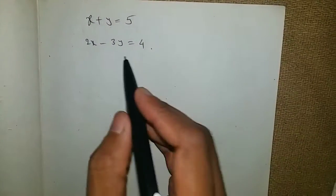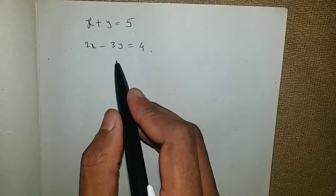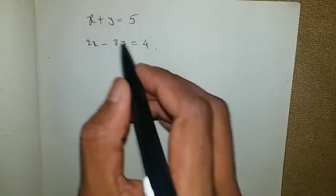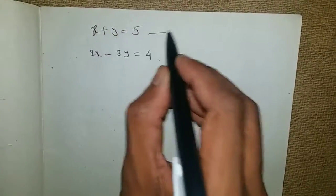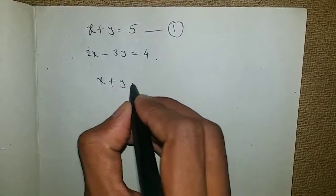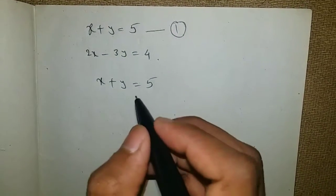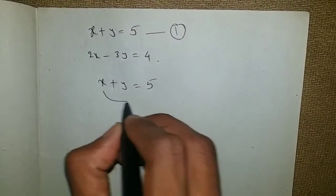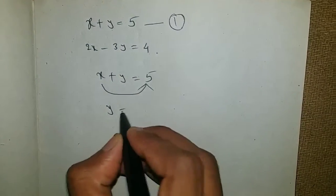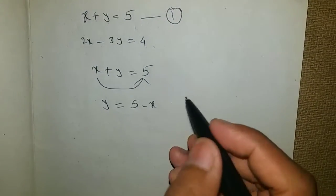Now let us discuss the same problem using the substitution method. I am taking the first equation: x plus y is equal to 5. I will take x to the right side, so y is equal to 5 minus x.